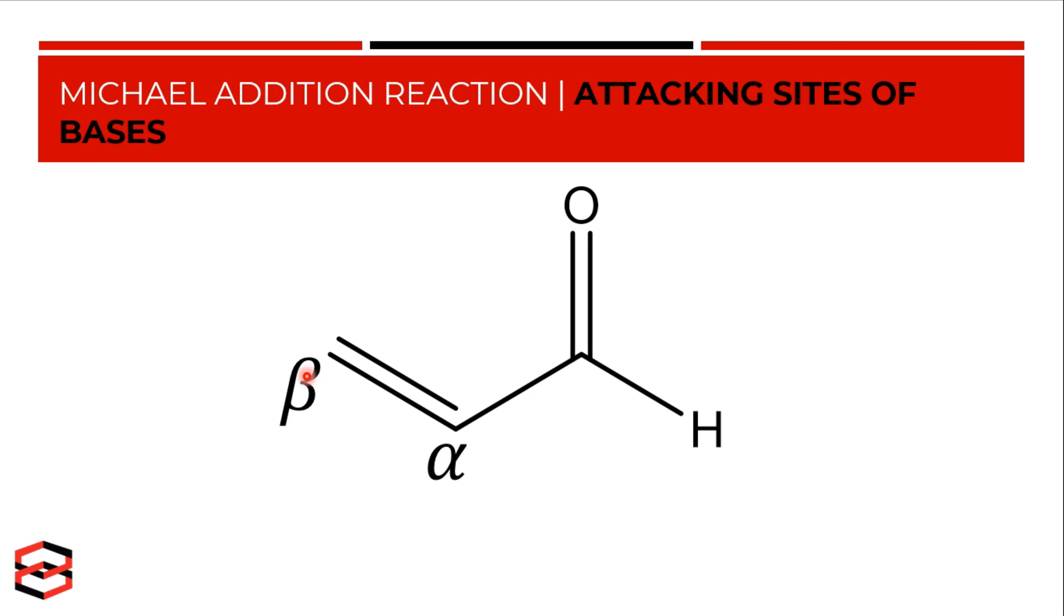Now you need to know that the beta carbon and the carbonyl carbon are both electrophilic in nature. So whenever you have a nucleophile, a nucleophile can attack at the beta carbon and the carbonyl carbon. Weak bases tend to attack at the beta carbon, while strong bases tend to attack at the carbonyl carbon. So you get direct addition, whereas weak bases will give you a conjugate addition.